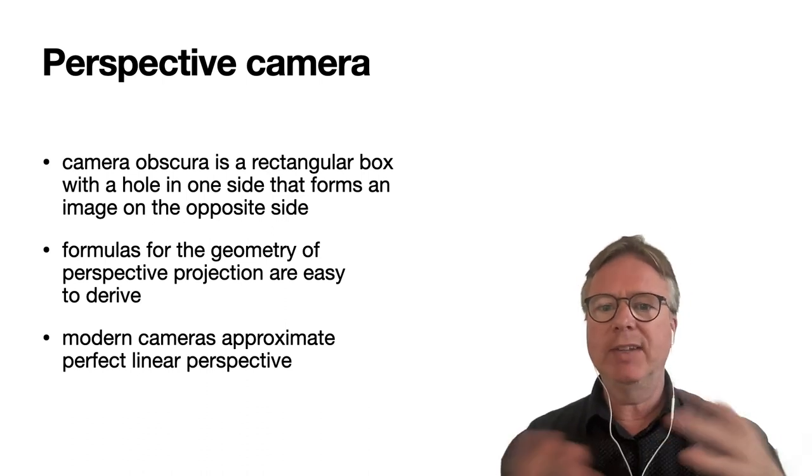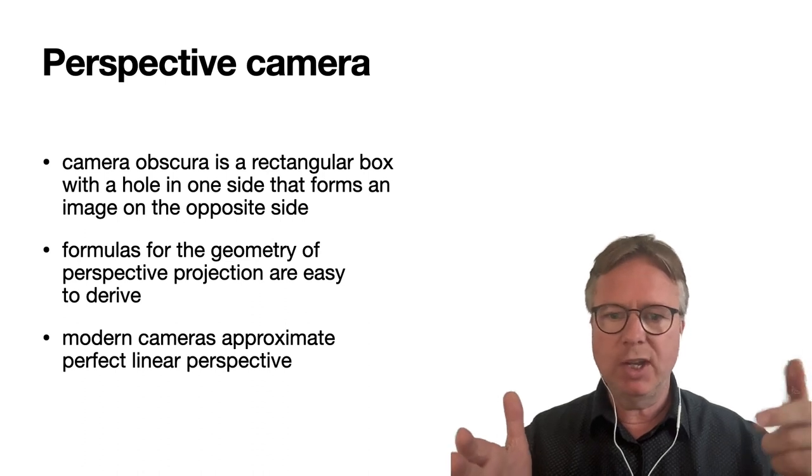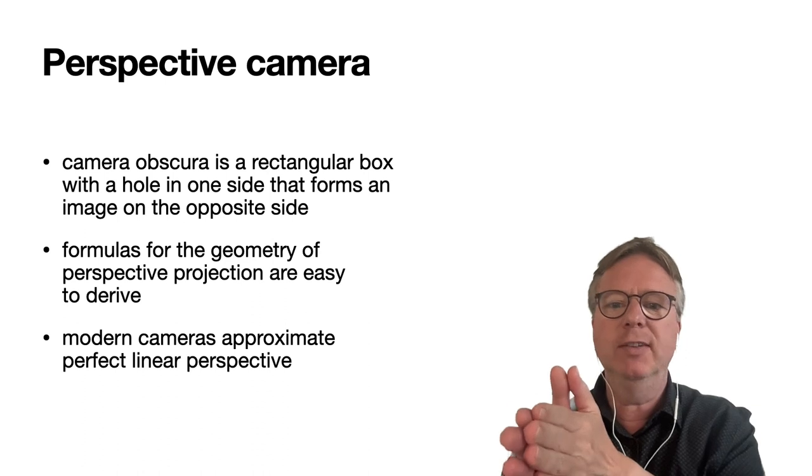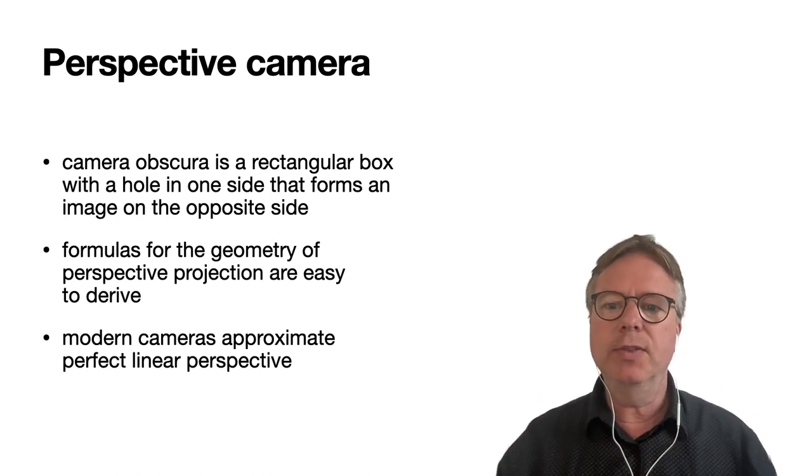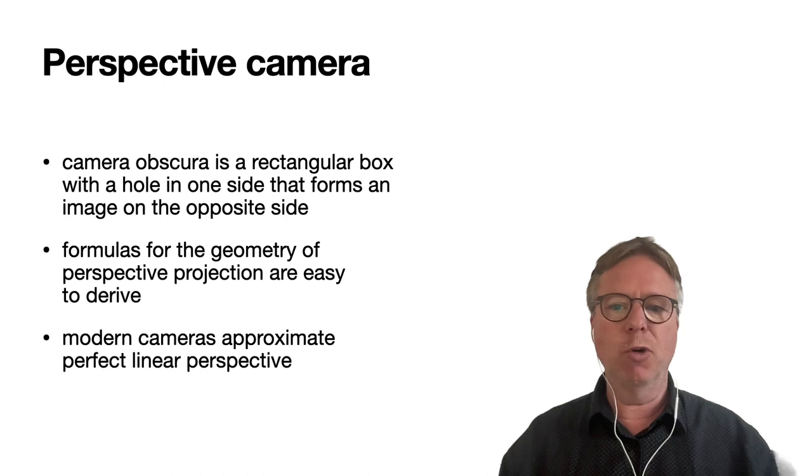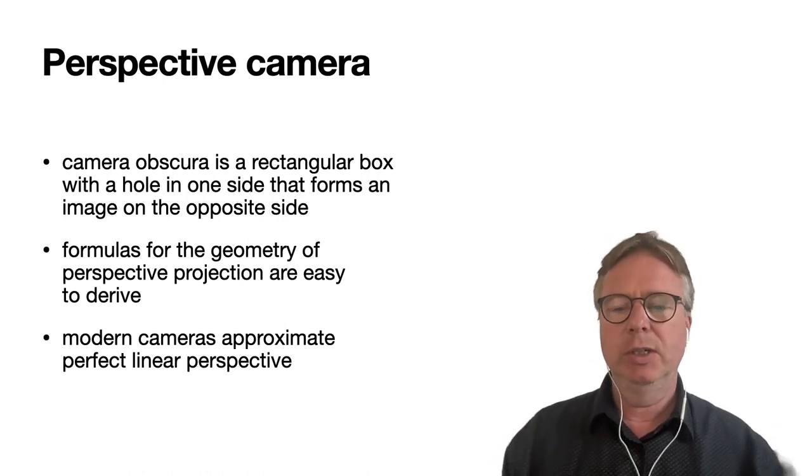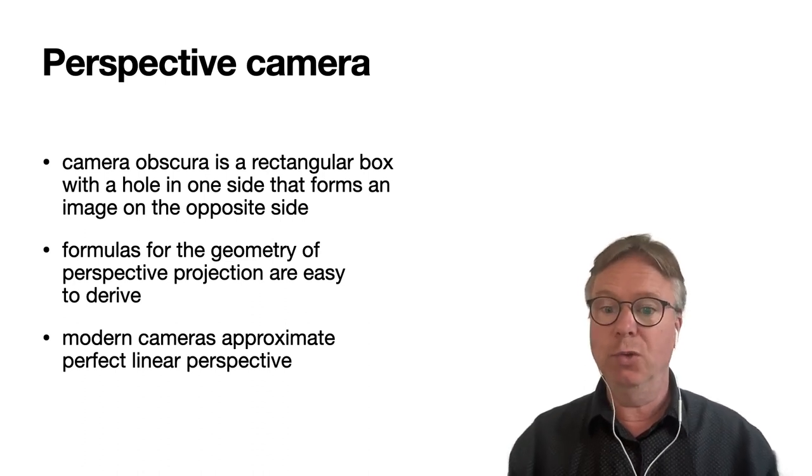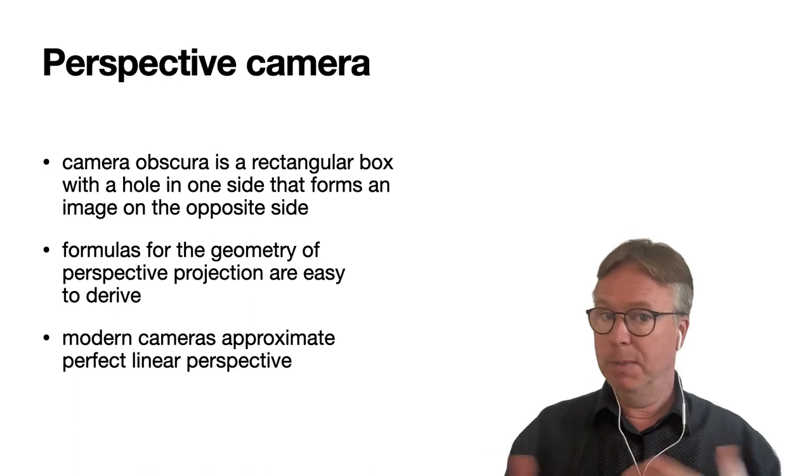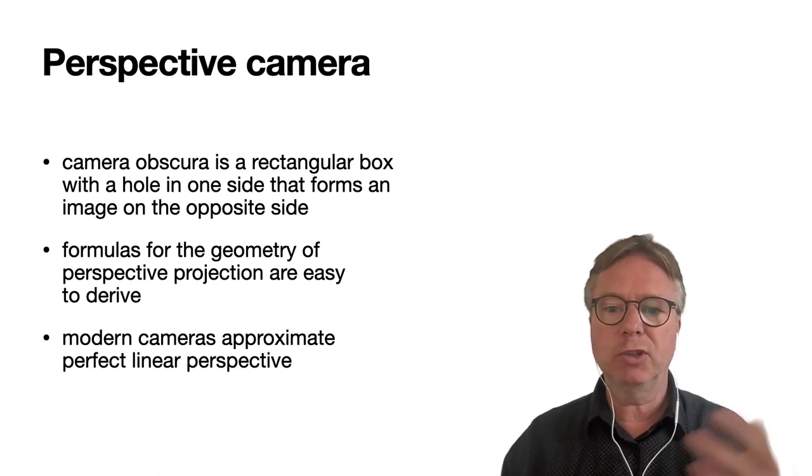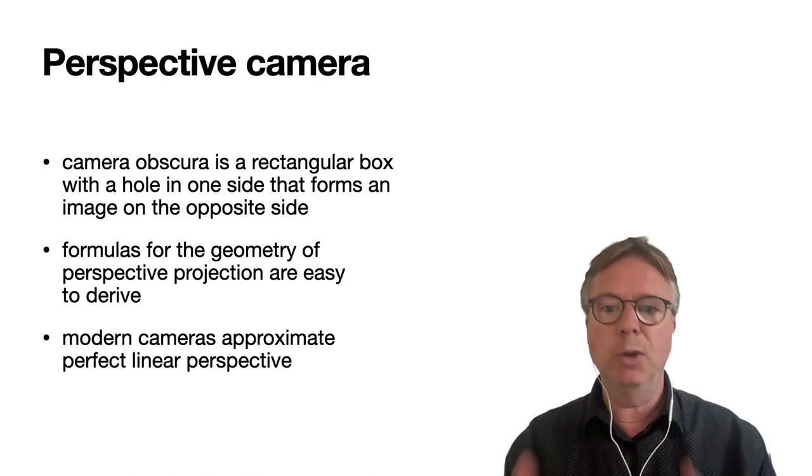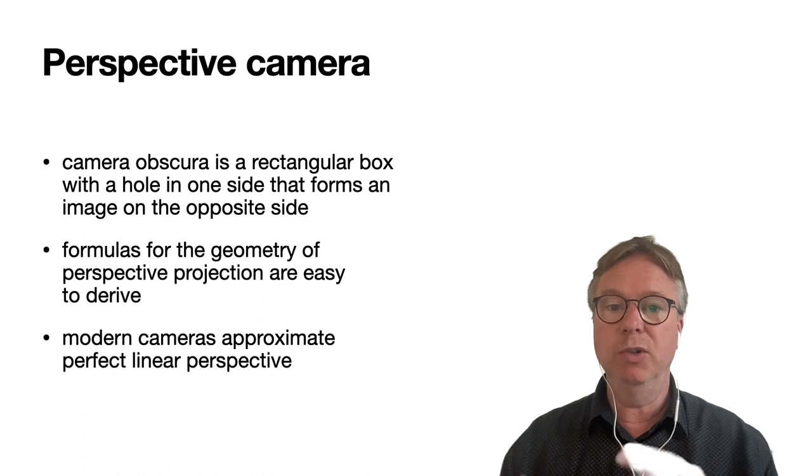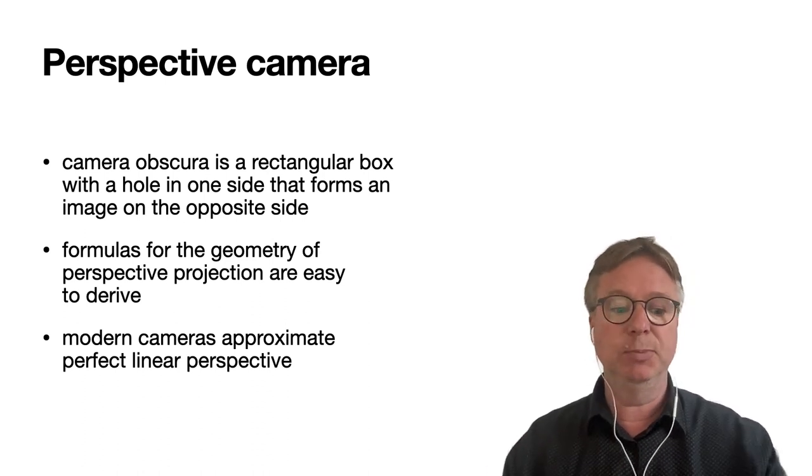That's basically a rectangular box with a hole in one side that forms an image on the back of the rectangular box on the opposite side. It turns out that the mathematics and formulas for the geometry of that system are quite easy to derive and very useful. The interesting and maybe surprising thing is that modern cameras approximate perfect linear perspective, so the model we'll derive is quite simple but still applicable even to cameras with very advanced systems of lenses.